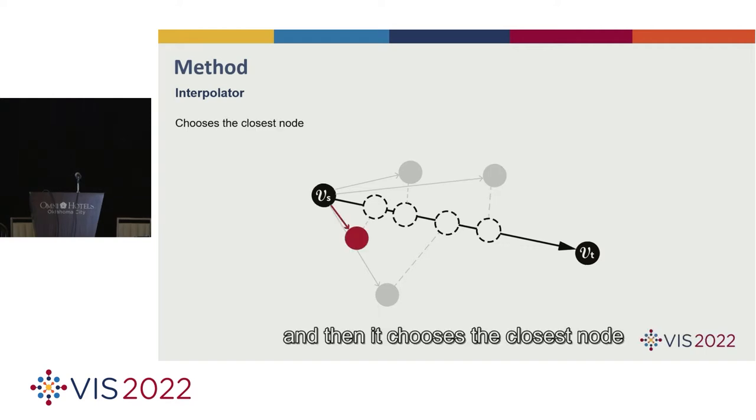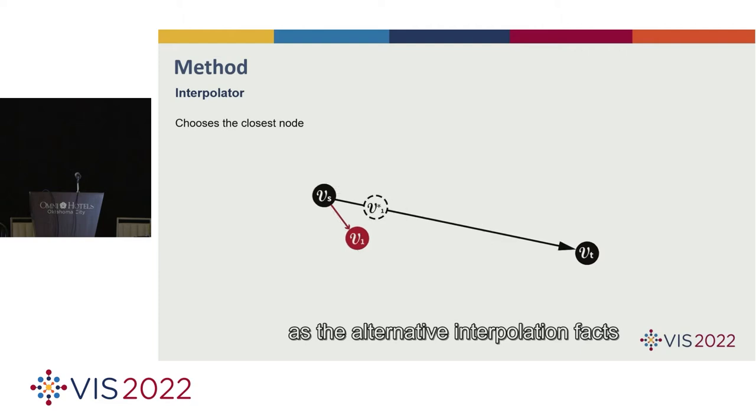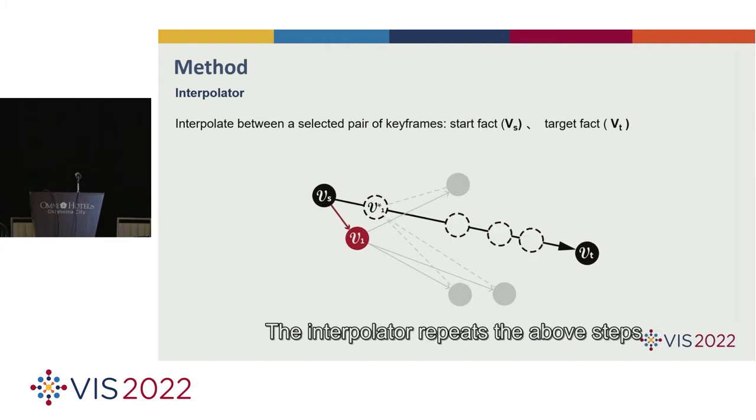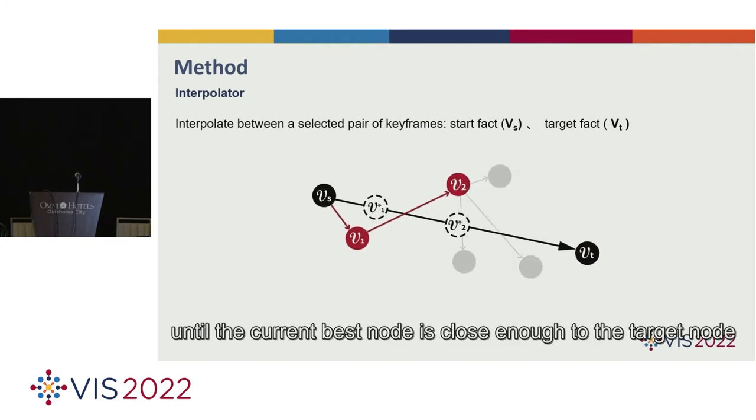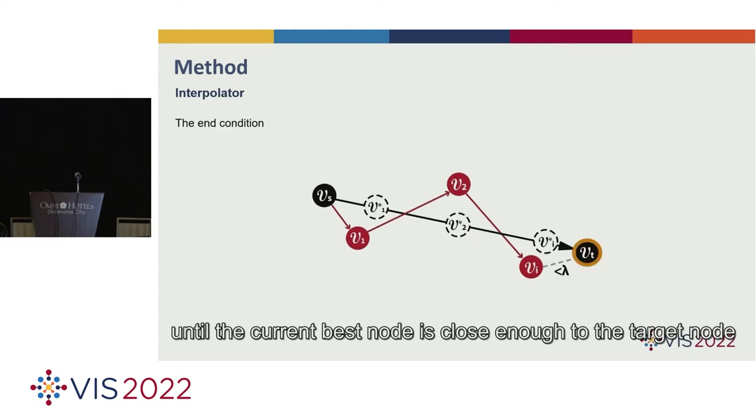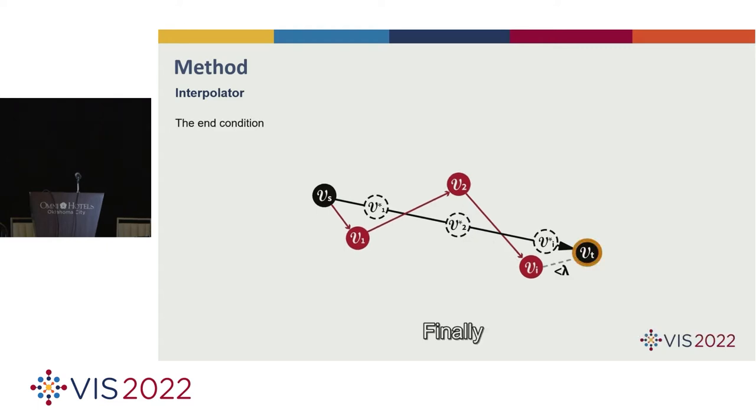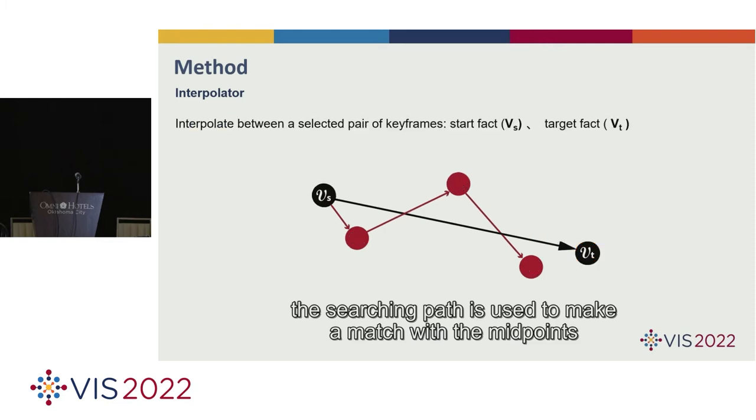And how does it search? The vector representation of each potential fact makes an approximated projection in the desired direction. And then, it chooses the closest node as the alternative interpolation facts. The interpolator repeats the above steps until the current best node is close enough to the target node. Finally, the searching path is used to make a match with the midpoints. And the set of facts that are closest to each midpoint are returned in order as the interpolation results.